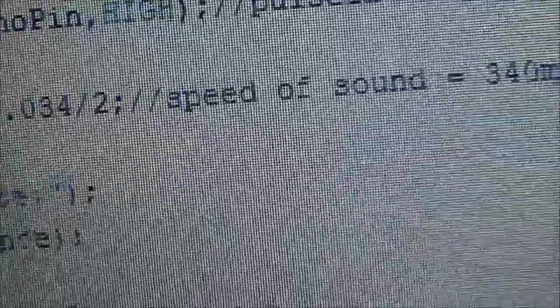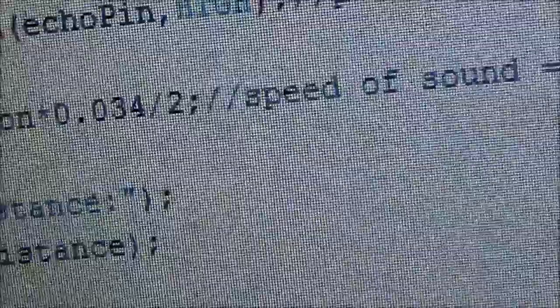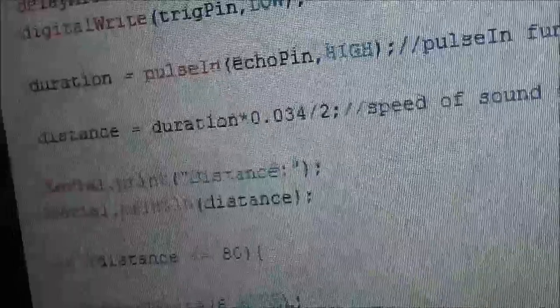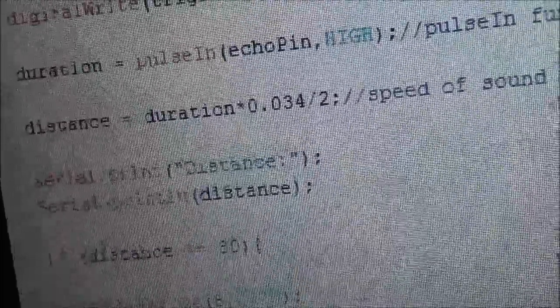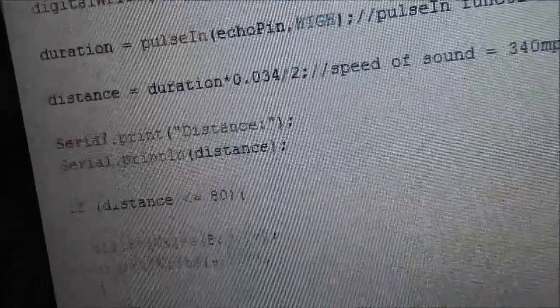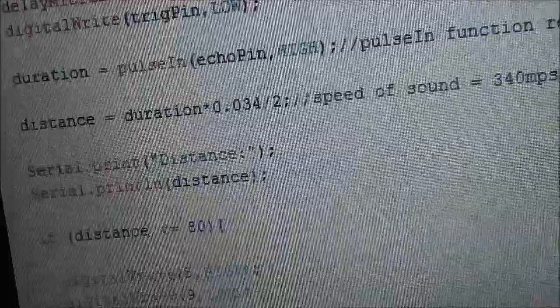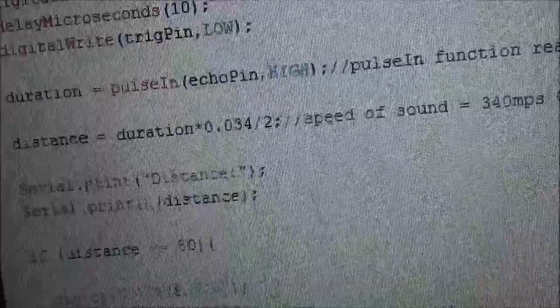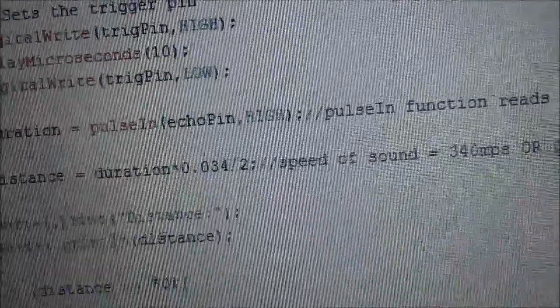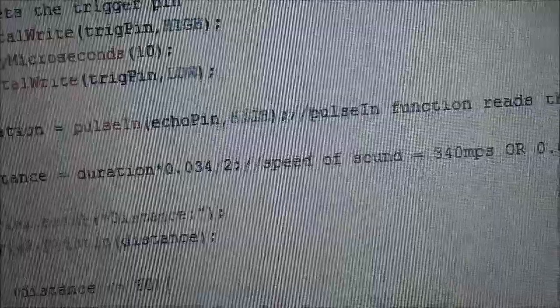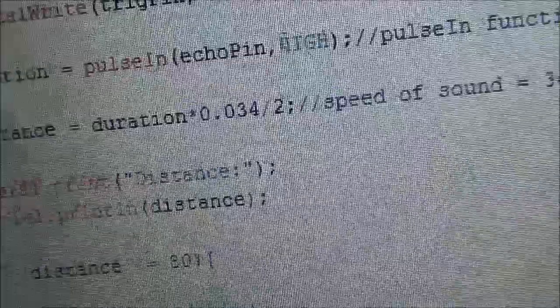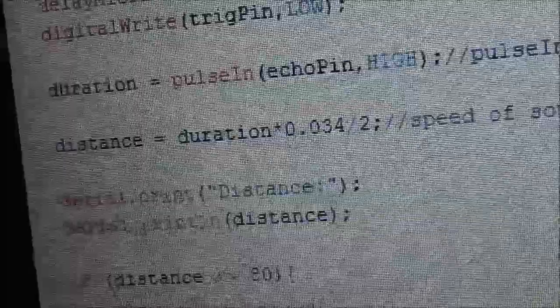Then I've also divided it by 2. The reason for this is that the duration of the wave is the total duration, like the total time it takes for the wave to be emitted, hit the object, and then come back. So it would be actually double the distance since the wave is going and also coming back. But we only need the distance which the wave is traveling once.